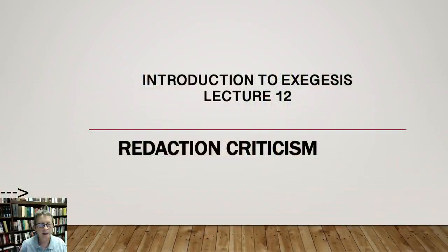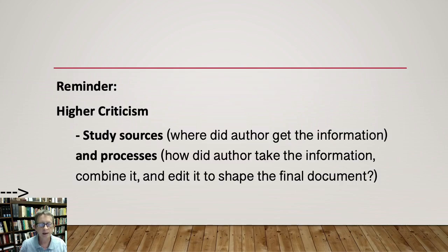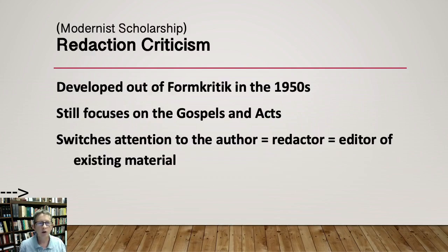We're continuing to work through different types of higher criticism. The previous lecture was about form criticism, which was the original method that then received a name as other methods developed. This time we're looking at redaction criticism, lecture 12, and you'll see that it is not very complicated, even though the name seems unfamiliar. Higher criticism is looking at sources and processes, and this time we're going to focus very much on the author.